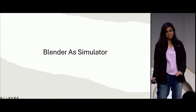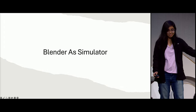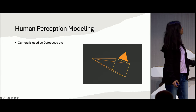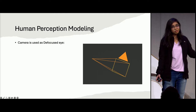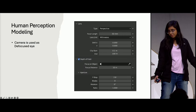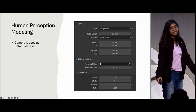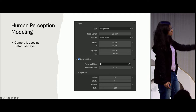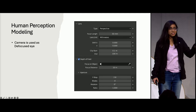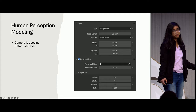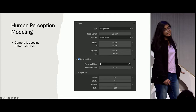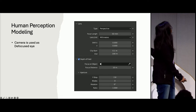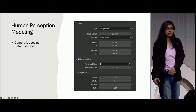Now I'll walk through how I made each component in Blender. For the human eye, we used a camera. With the depth of field parameter, we can manually set the camera to a fixed focus. With aperture parameters, we can set the pupil size — all parameters of the human eye can be adjusted. By changing these parameters, we can get a complete defocused eye system.